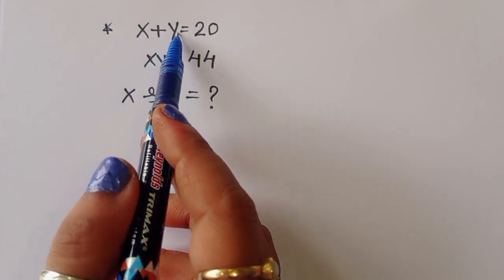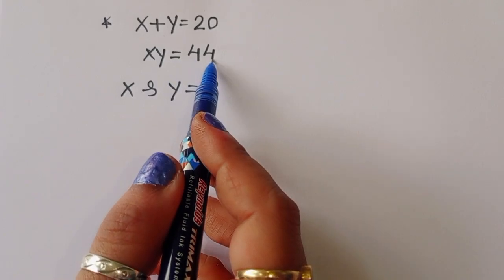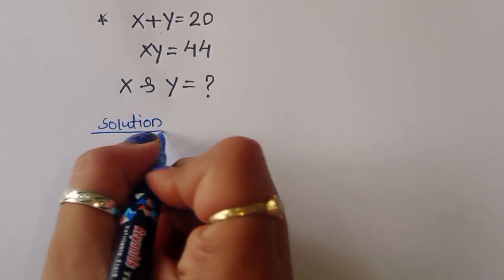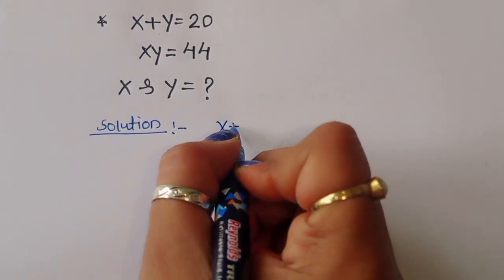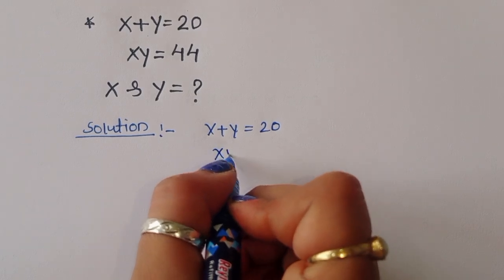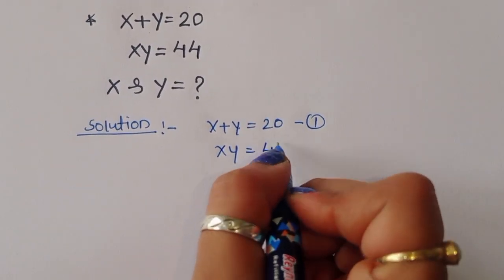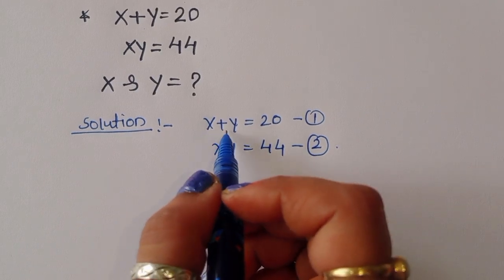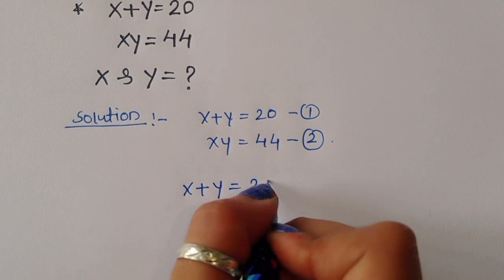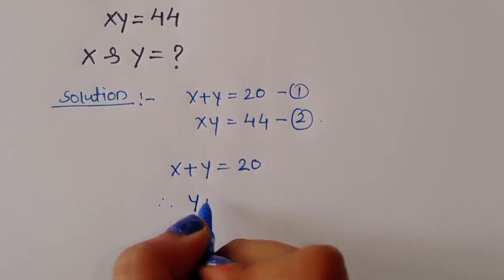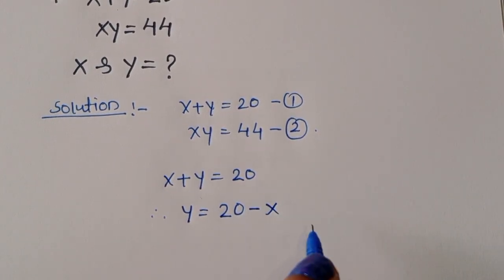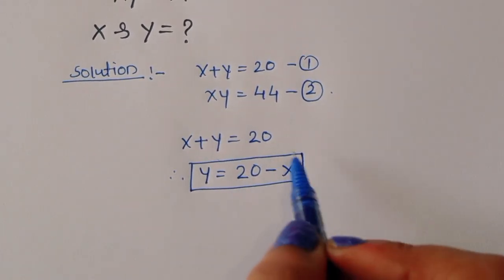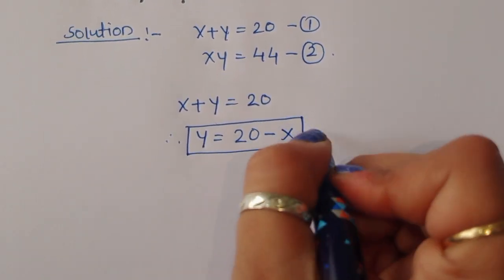The question is: given x plus y is equal to 20 and x times y is equal to 44, we have to find the value of x and y. So equation number 1 is x plus y equals 20, and equation number 2 is x y equals 44. From equation 1, we can write y is equal to 20 minus x. This is equation number 3.